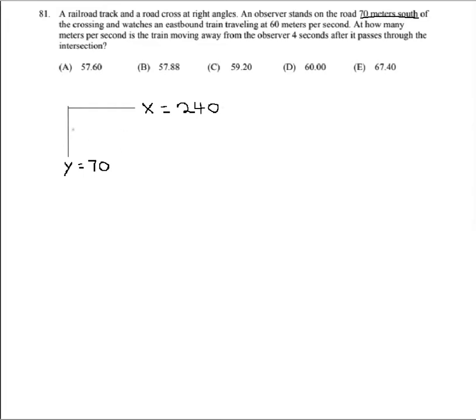We also know that our change in x relative to time, dx/dt, is going to be 60 meters per second. And since our observer is just standing and watching, our change in y relative to time, dy/dt, is going to be zero.